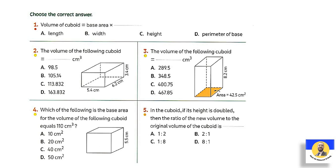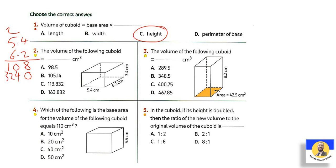Choose the correct answer. Question 1: To find the volume of a cuboid, the rule is: volume of cuboid equals base area times height. Question 2: To find the volume, we multiply 5.4 times 6.2 times 34. First: 2×4=8; 2×5=10; put 0; 6×4=24 carry 2; 6×5=30+2=32. Make addition: 8, 4, 3, 3. Place decimal point after 2 digits. Then multiply 33.48 by 34.